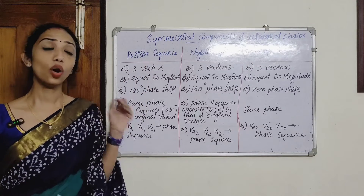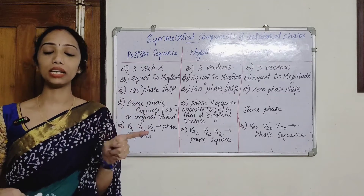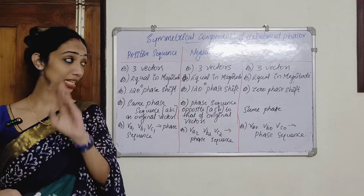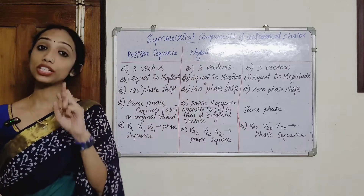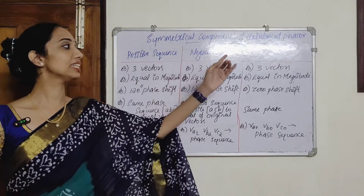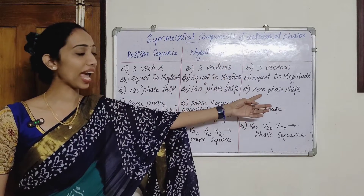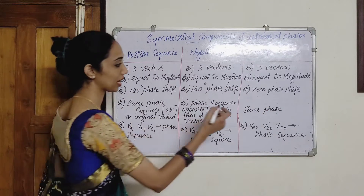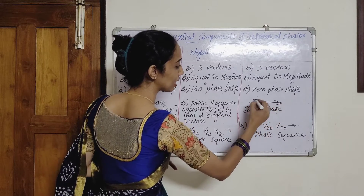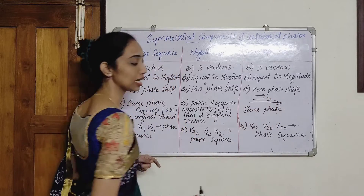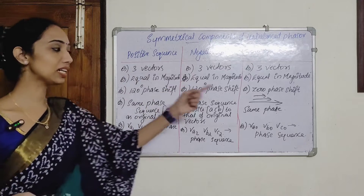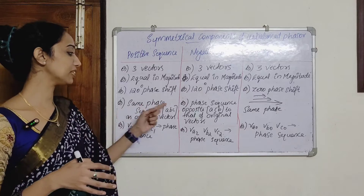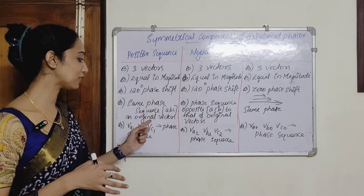The third point: positive sequence has a 120-degree phase shift. The fourth point is the same phase sequence A, B, C as that of the original vector. In the original vector we call VA, VB, VC — the positive sequence has the same phase sequence A, B, C as the original vector.